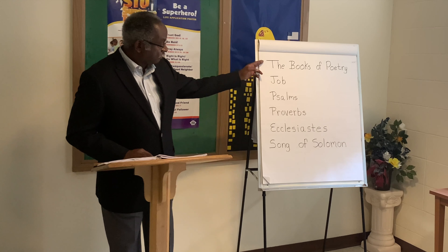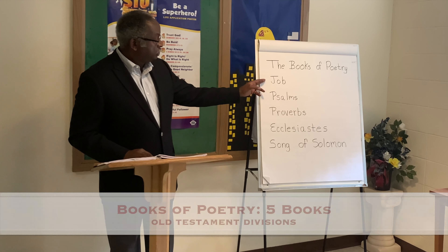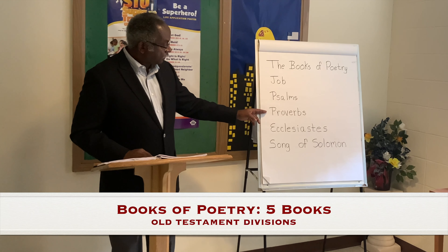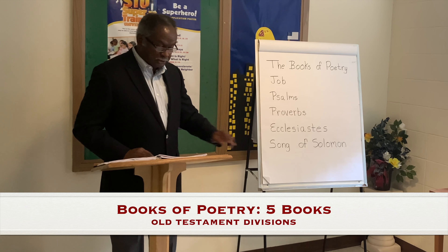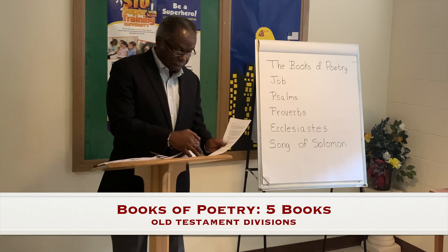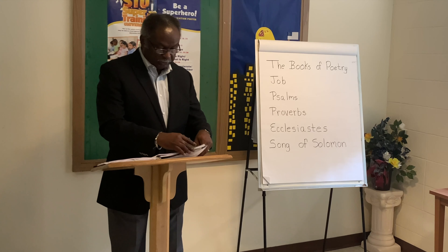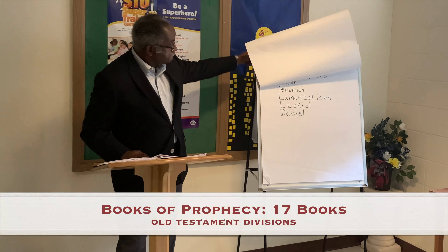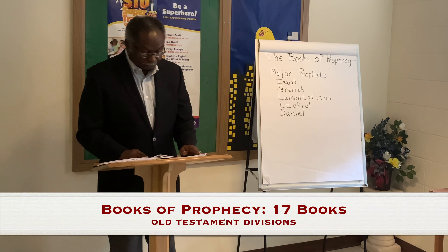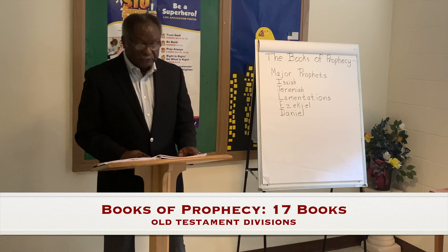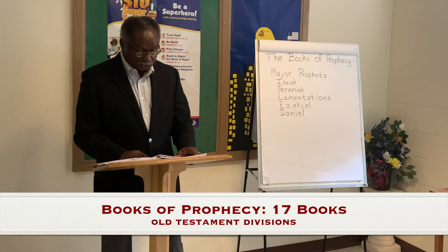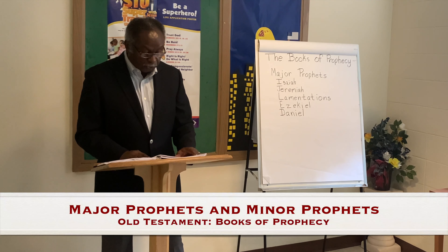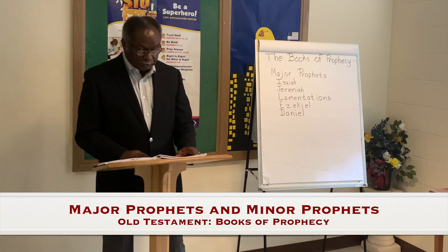These books are the books of poetry: Job, Psalms, Proverbs, Ecclesiastes, and Song of Solomon. The last division is the books of prophecy. There are 17 books of prophecy in the Old Testament, and they are divided into two groups. The long books are the major prophets, and the short books are the minor prophets.